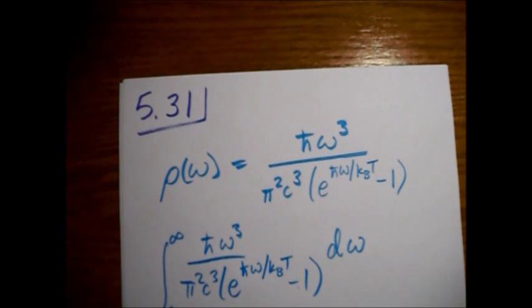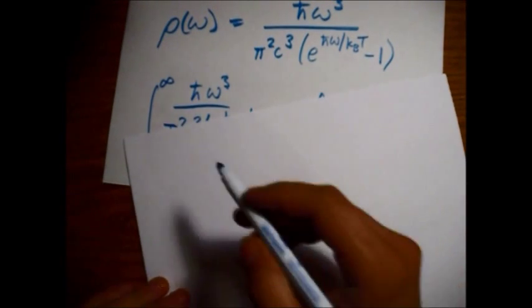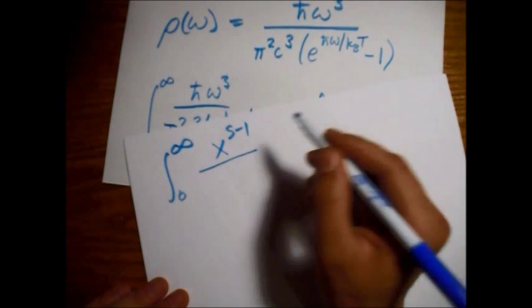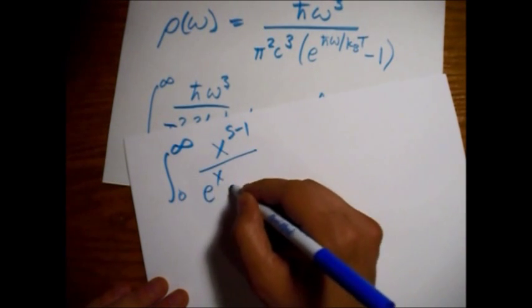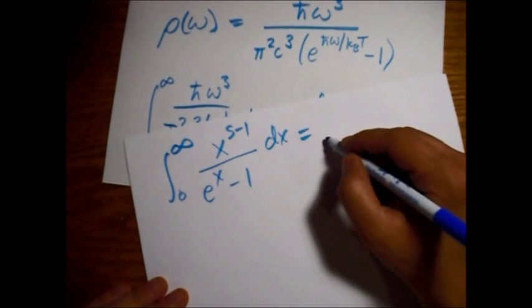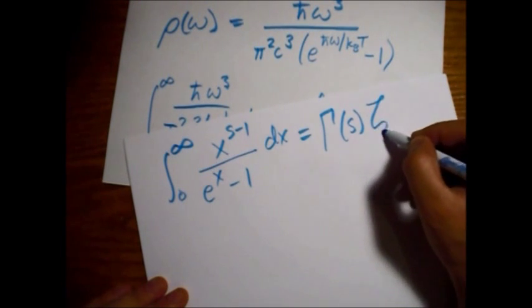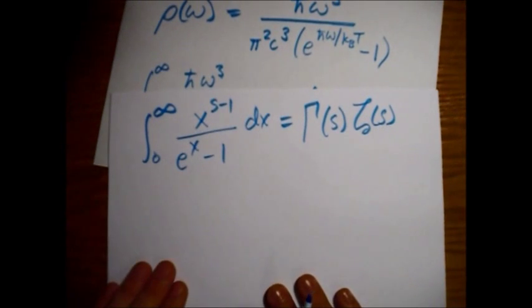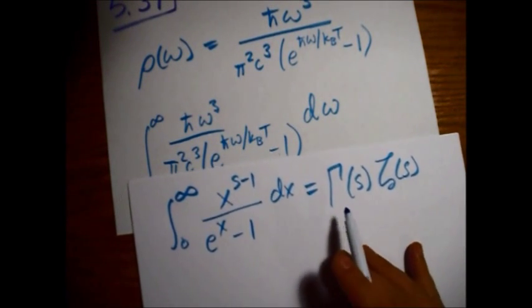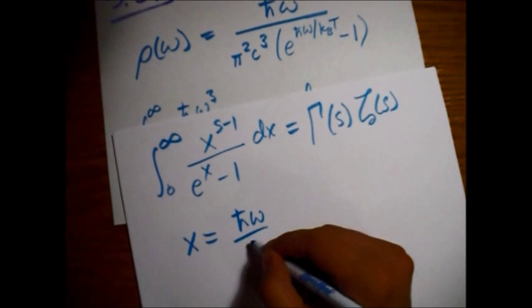We're going to, again, looking at equation 5.110. I'll write that again, right here. The integral from 0 to infinity of x to the s minus 1 over e to the x minus 1 dx is equal to the Euler-Gamma function of s. Okay, so we're shooting for that form. So again, the obvious choice of a substitution to make, x is equal to h bar omega over kBT.